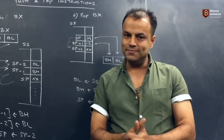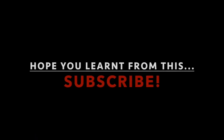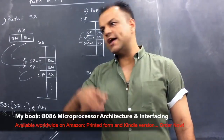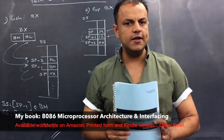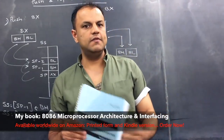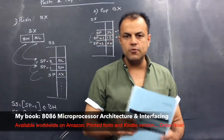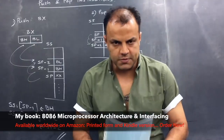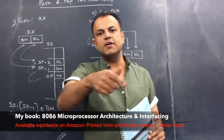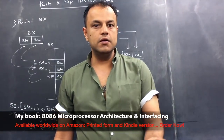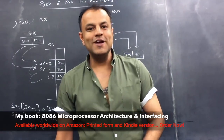The complete PUSH and POP instructions with diagrams, and every instruction of 8086 in detail, are explained in my book — including programming, interfacing, and everything about 8086, plus a brief introduction and architecture of higher processors like 386, 486, and Pentium. The book is available on Amazon — links are given below — as a physical copy worldwide and also as a Kindle soft copy.